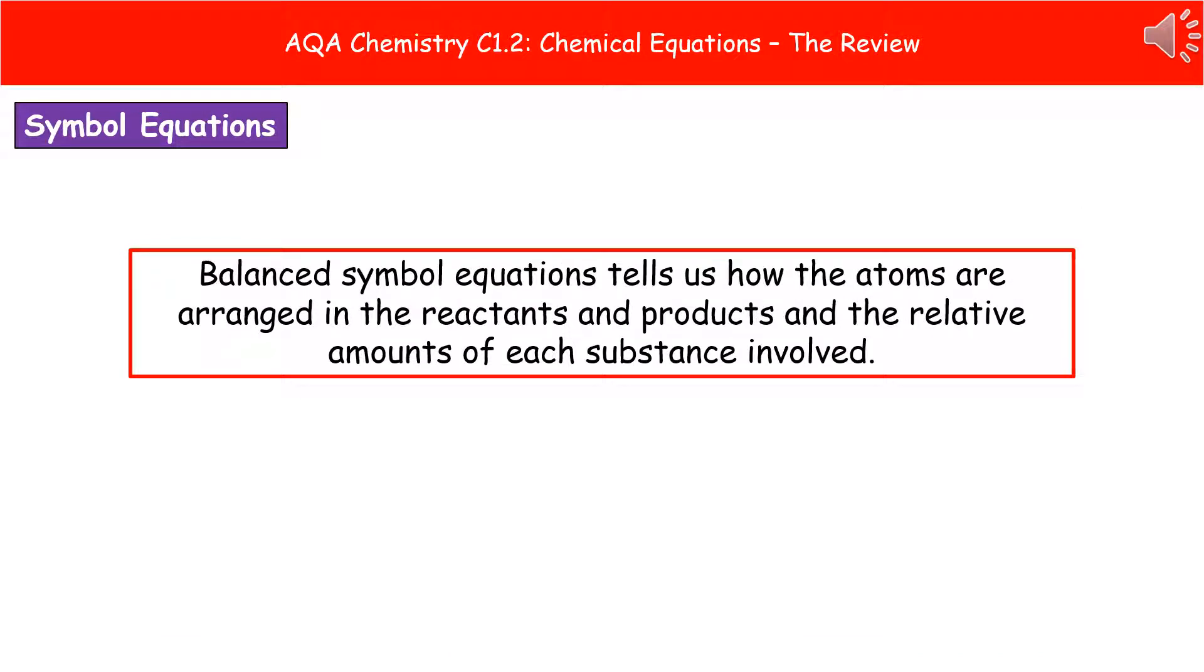Now that we understand the law of conservation of mass, we can go on to look at this idea of balanced symbol equations. This is the one that's going to tell us how the atoms are arranged within the reactants and the products. And it also tells us the relative amounts of each substance involved. This is probably the one that you've heard me say, balanced symbol equation. You're rolling your eyes and groaning a little bit because you all seem to hate them. But we're going to go through it one step at a time so you can understand how to do this and therefore get the marks for it in the exam.